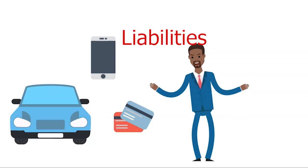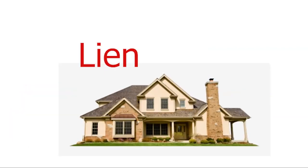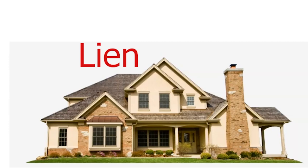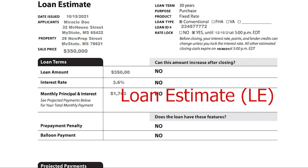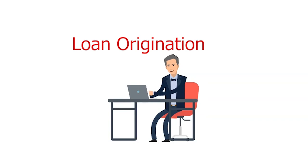Liabilities: your financial obligations or debts, such as your mortgage, car loan, or payable rent. Lien: the legal right to possess the property of a borrower that was pledged as collateral until the debt is paid. Line of Credit: an agreement by a lender to extend a pre-set amount of money for a specified time. Loan Estimate: according to the Consumer Financial Protection Bureau, a three-page form that a lender must give to a loan applicant within three days of loan application, detailing the estimated interest rate, monthly payment, and total closing costs. Loan Origination: the process by which a borrower applies for a loan and the mortgage lender reviews the application and afterwards approves it for disbursement or rejects it due to non-compliance.